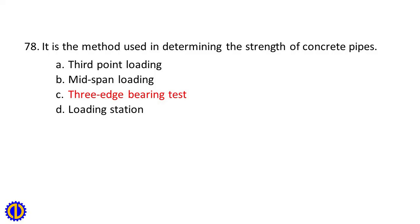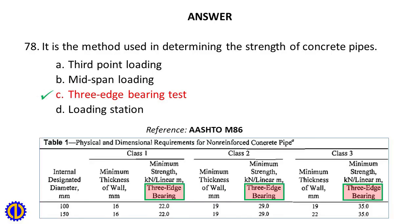Question 78. It is the method used in determining the strength of concrete pipes. A. 3rd point loading, B. Mid-span loading, C. 3-edge bearing test, D. Loading station. Answer: C. 3-edge bearing test. Reference: AASHTO M86.